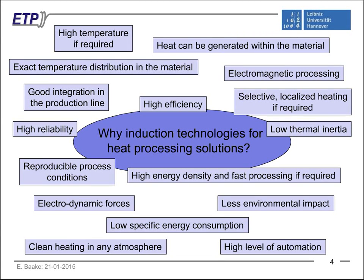We can have very high temperatures if required — we are in principle not limited as with a gas flame in temperature. The main advantage is that heat can be generated within the material, meaning very fast heating. We can have an exact temperature distribution, integrate induction technologies into production lines with high reliability, and we have comparably high efficiency. The processes are normally very reproducible, which is very important for heat treatment. High energy density leads to fast processing, and we have less environmental impact, low specific energy consumption, variable atmosphere, and a high level of automation.